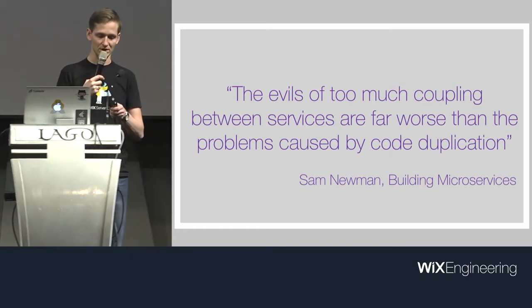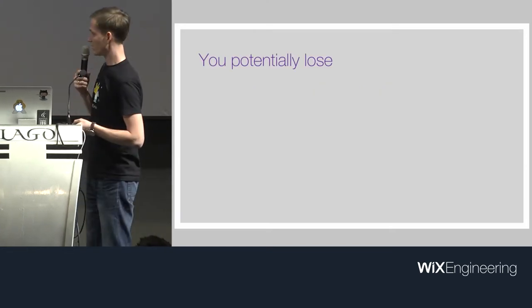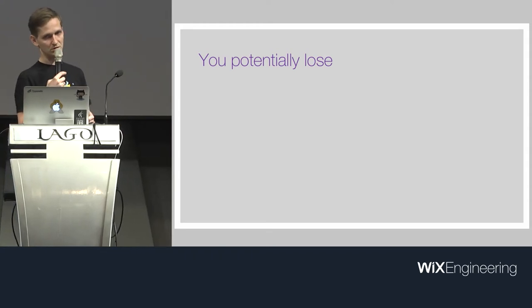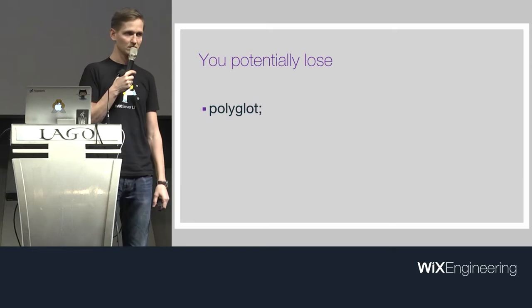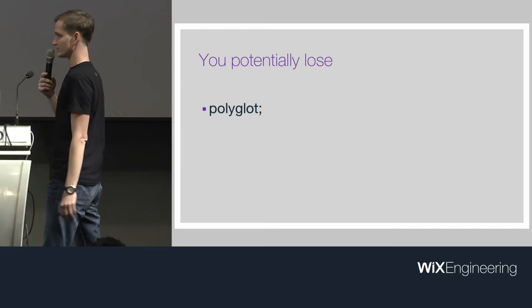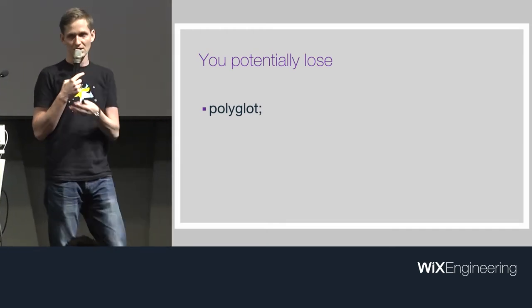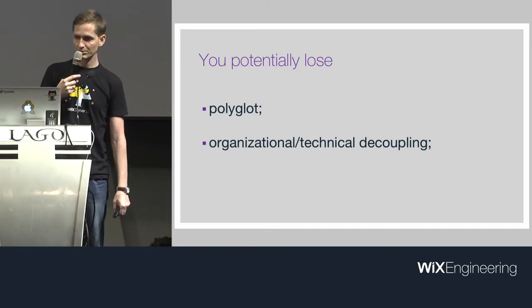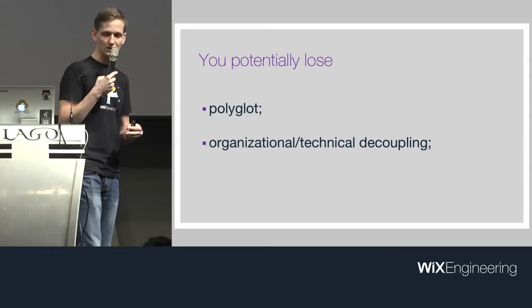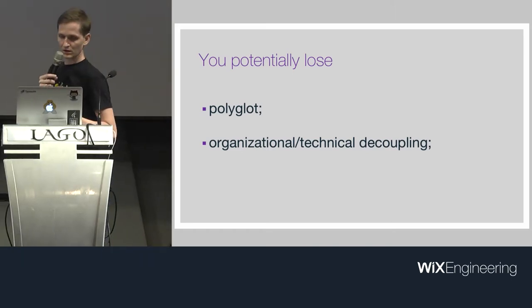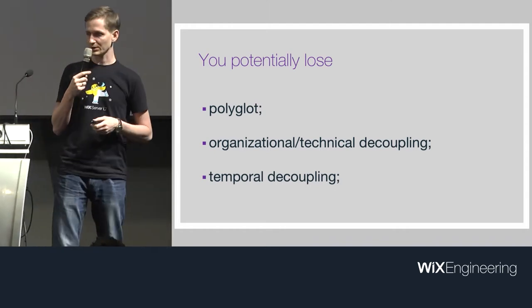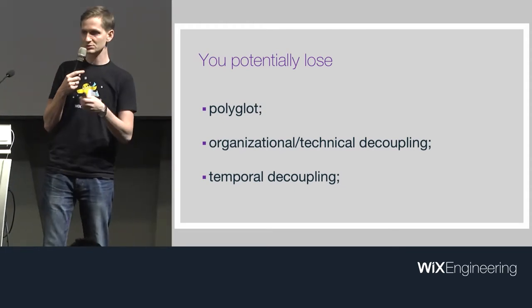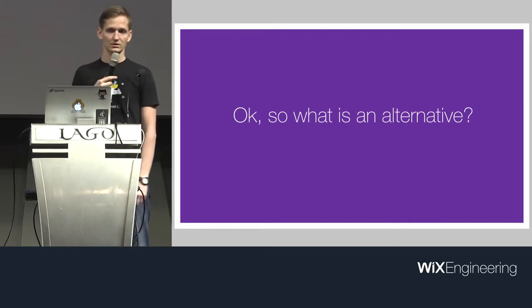By the way, that book is really good by Sam. By doing this binary coupling and restricting yourself to a single platform, you potentially lose the possibility to be polyglot. You just cannot have multiple platforms — Node, for example. You lose organizational technical decoupling, where teams can evolve technically without coupled collaboration, and you lose temporal decoupling, where an individual team can upgrade their stack, dependencies, threading model, and request model as they need.